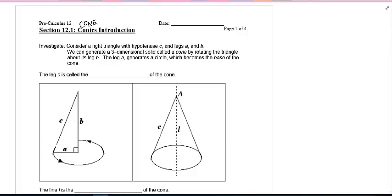To begin, I want you to investigate this right triangle with hypotenuse C and legs A and B. We can actually generate a three-dimensional solid called a cone by rotating the triangle about its leg B. Think of this as a 2D shape, and then as we rotate it around, we create this 3D solid.